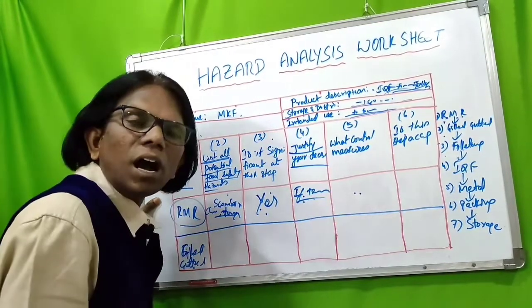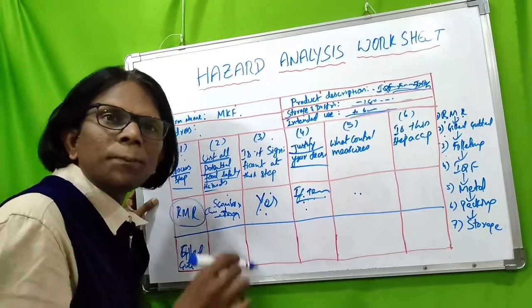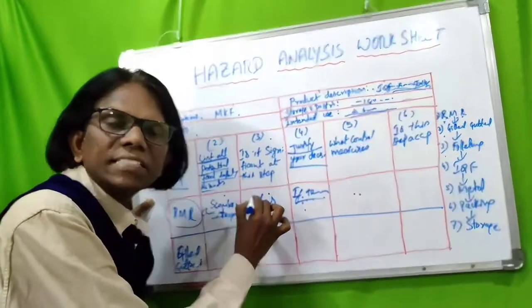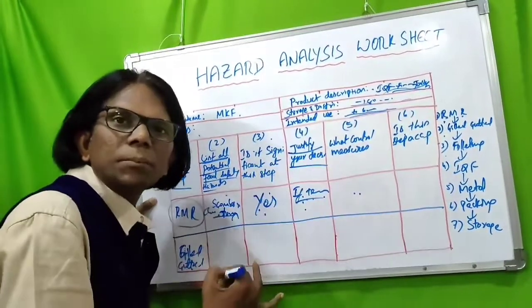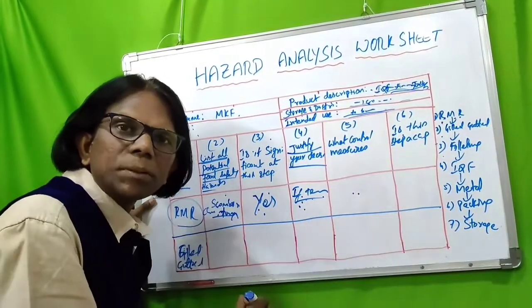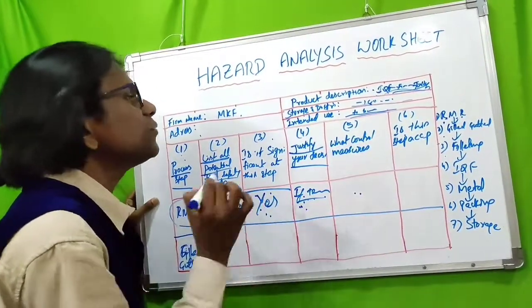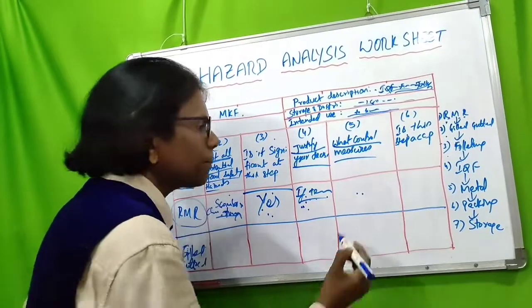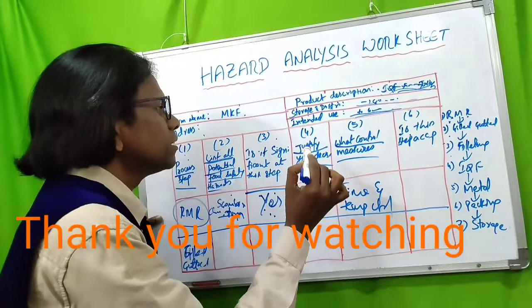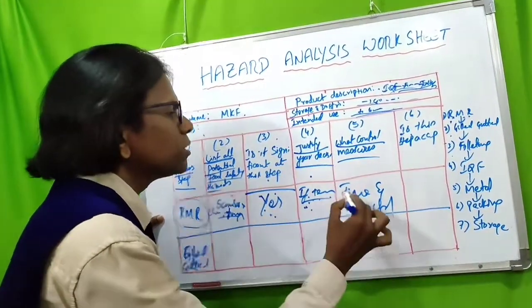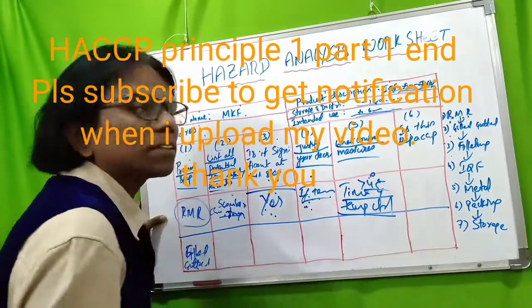The justification for scombrotoxin being a significant hazard is as follows: if temperature is abused after harvest, bacteria invading the gut region of the tuna can penetrate deeper into the meat. The fish flesh contains histidine protein, and after death the bacteria convert histidine to histamine through decarboxylation — histamine being the toxin. The control measure for this significant hazard is time and temperature control: maintaining chill temperature below 4 degrees centigrade at all times and ensuring a short processing period.